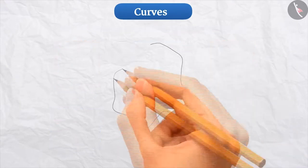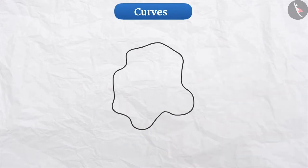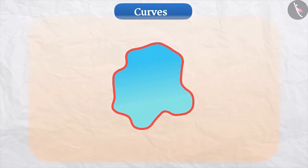When we talk about a closed curve, we say they have three parts. The part inside the curve, the part of the curve and part outside the curve.